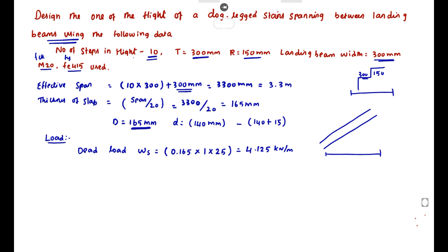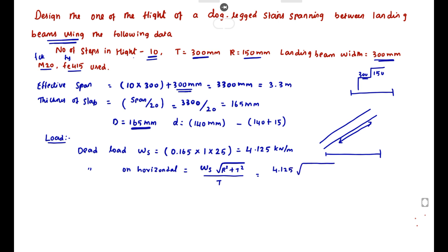The dead load on horizontal distance is calculated as Ws multiplied by the root of (R² + T²) divided by T. Substituting: 4.125 into root of (0.15² + 0.3²) divided by 0.3. Solving this, we get a value of 4.61 kN/m. This is the load on horizontal.